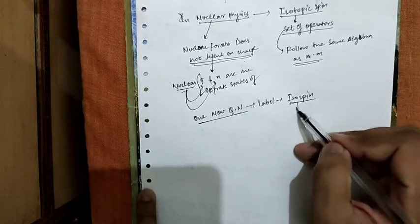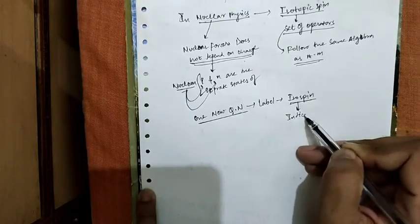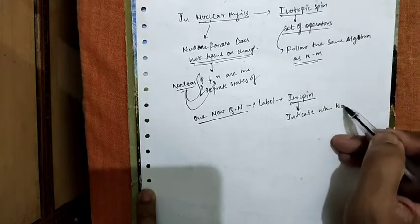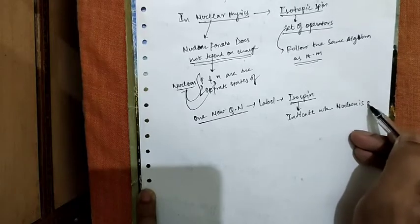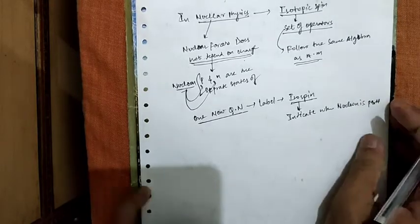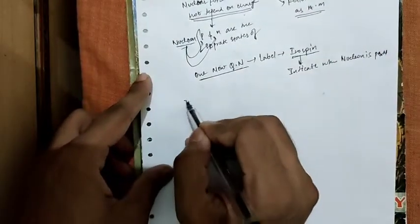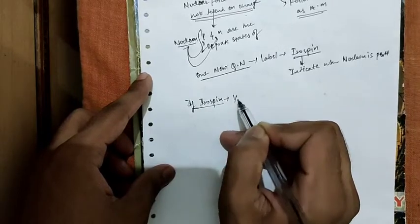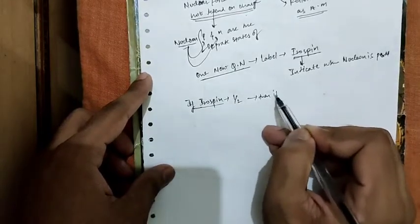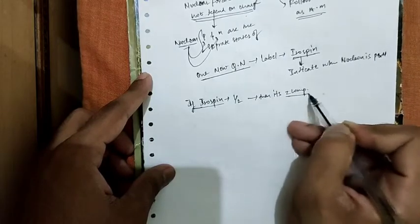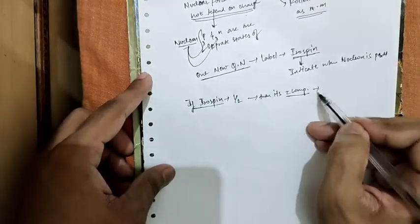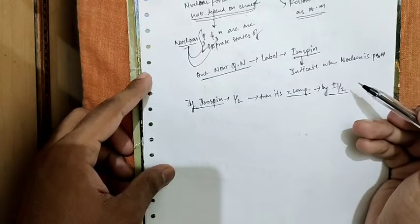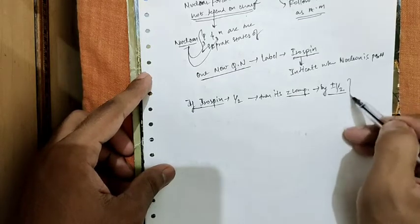This isospin indicates whether the nucleon is a proton or neutron. If isospin is one-half, then its z component is plus or minus one-half, where the difference between proton and neutron can be understood